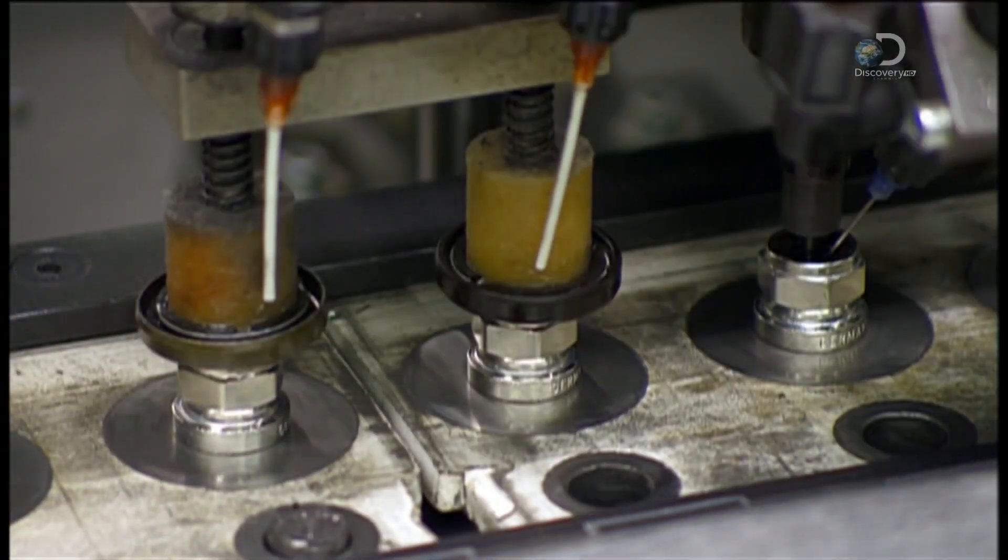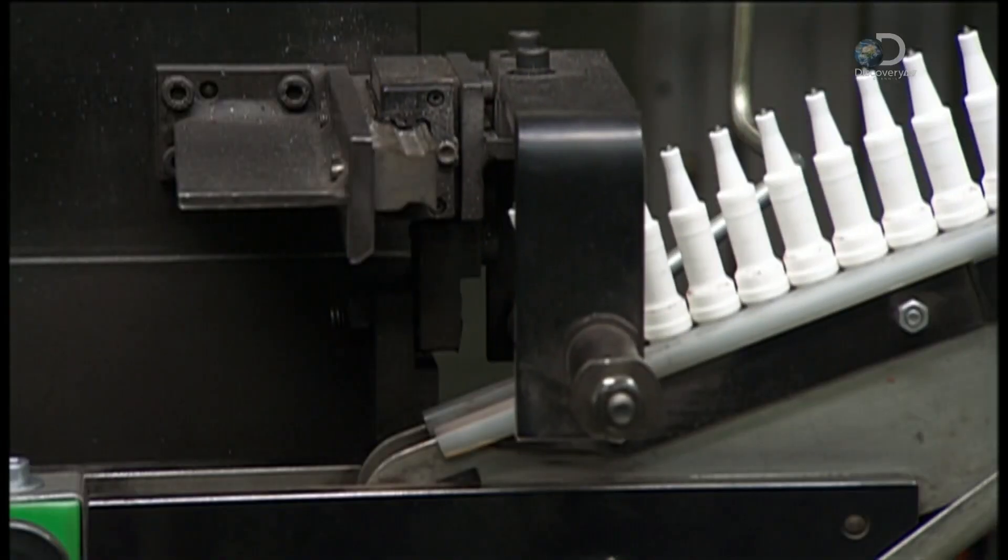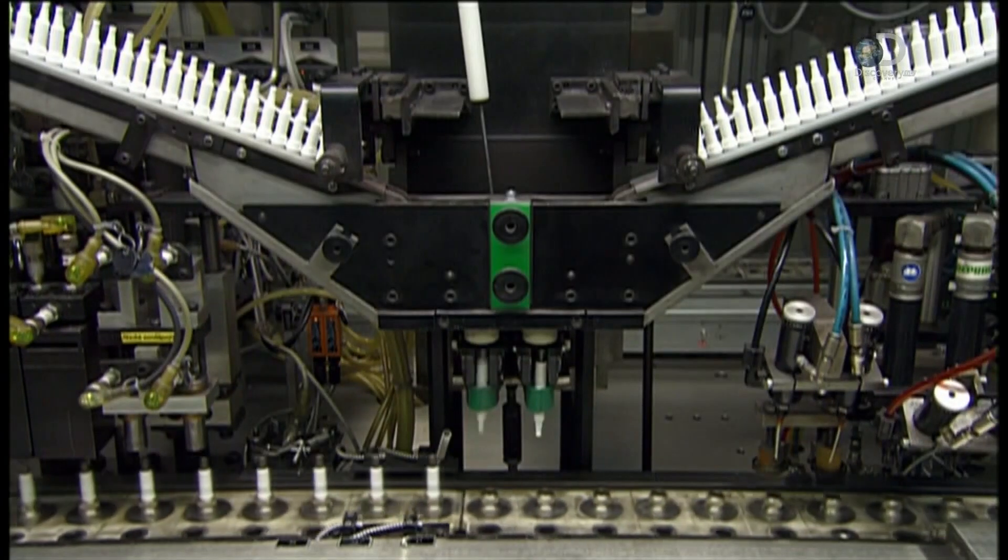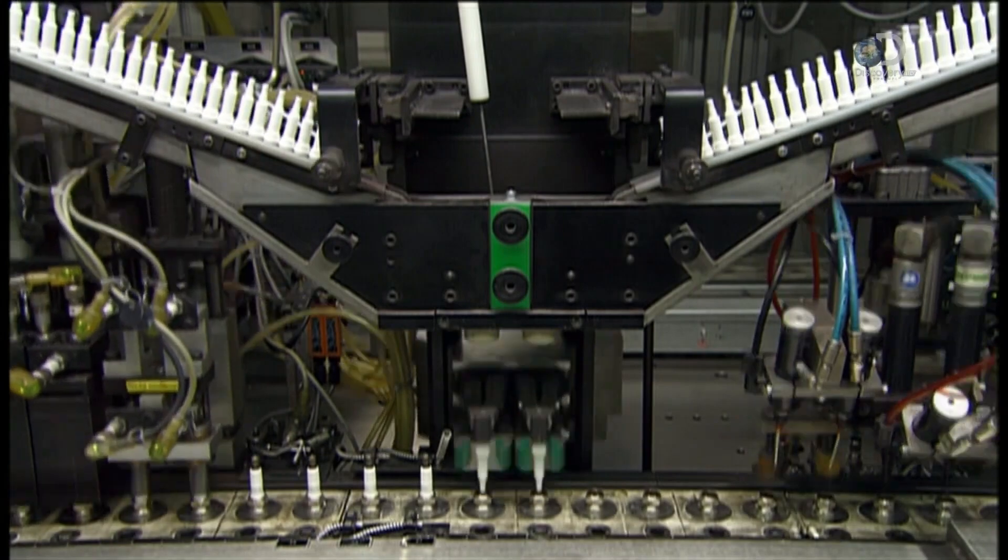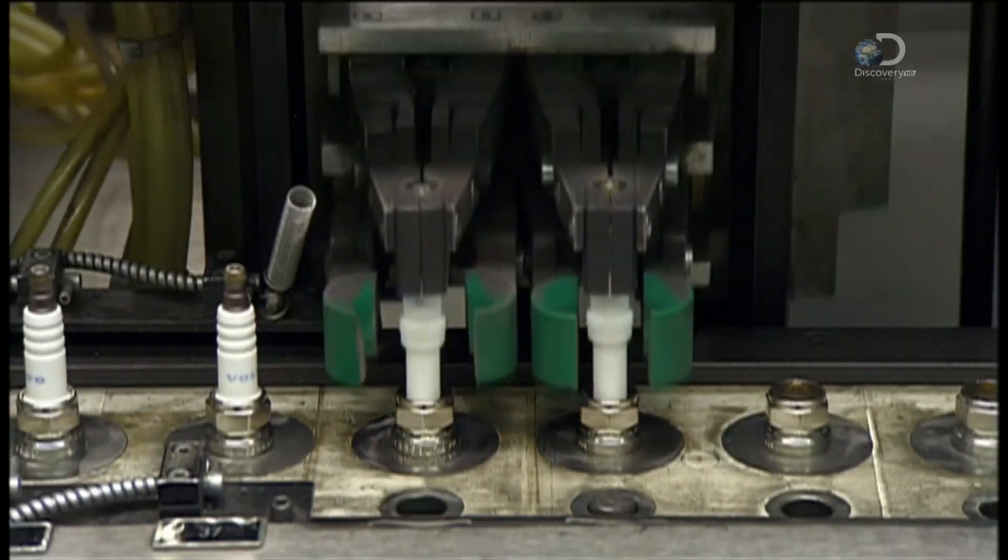Nozzles squirt oil onto the metal shells to lubricate them. The insulators funnel into the grip of robots which install them into the shells. They slide in easily because of the lubrication job.